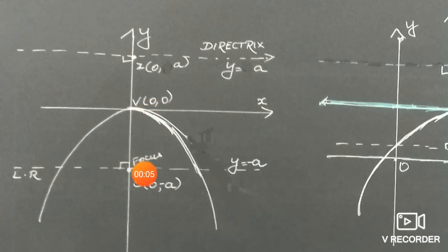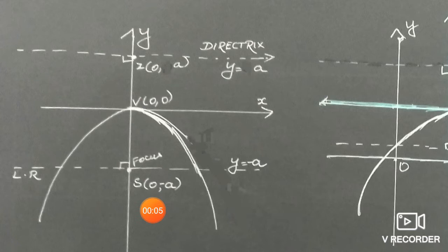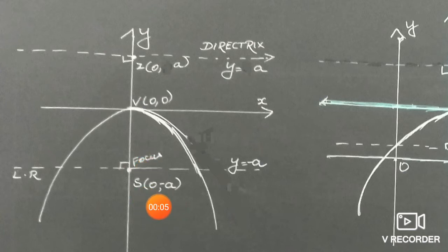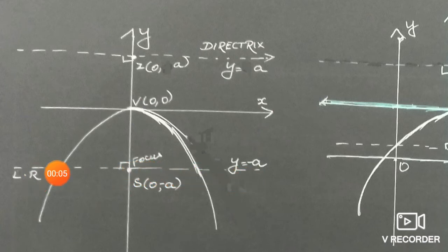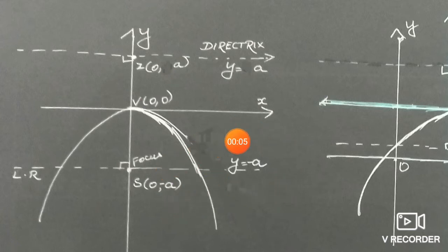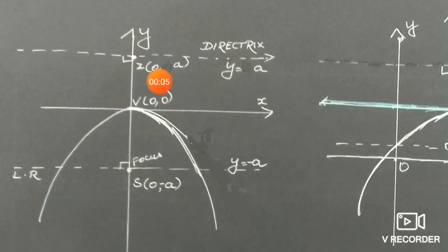Focus on the distance from the vertex to the focus. The y-axis is the axis of symmetry. The focus is on the negative y-axis at the point (0, -a). We draw a horizontal line: y is equal to minus a.